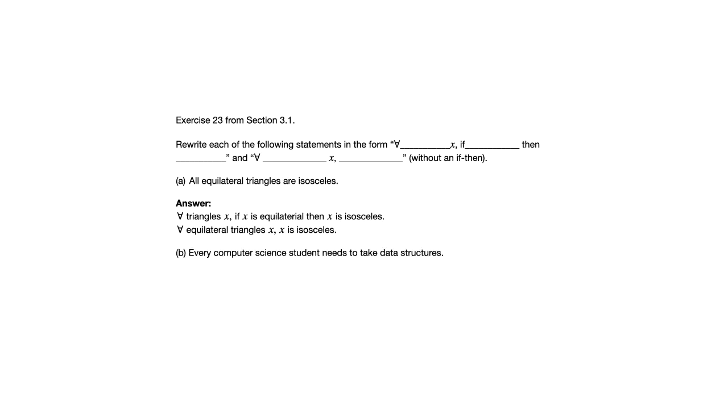Part B says every computer science student needs to take data structures. We're going to do the same thing here. You're going to see a very similar way of adjusting from the first version to the second one. So here for all students x, if x is a computer science student, then x needs to take data structures. That certainly has the same meaning as the given statement. And now if I don't want to use an if-then, I could say for all computer science students x, x needs to take data structures.